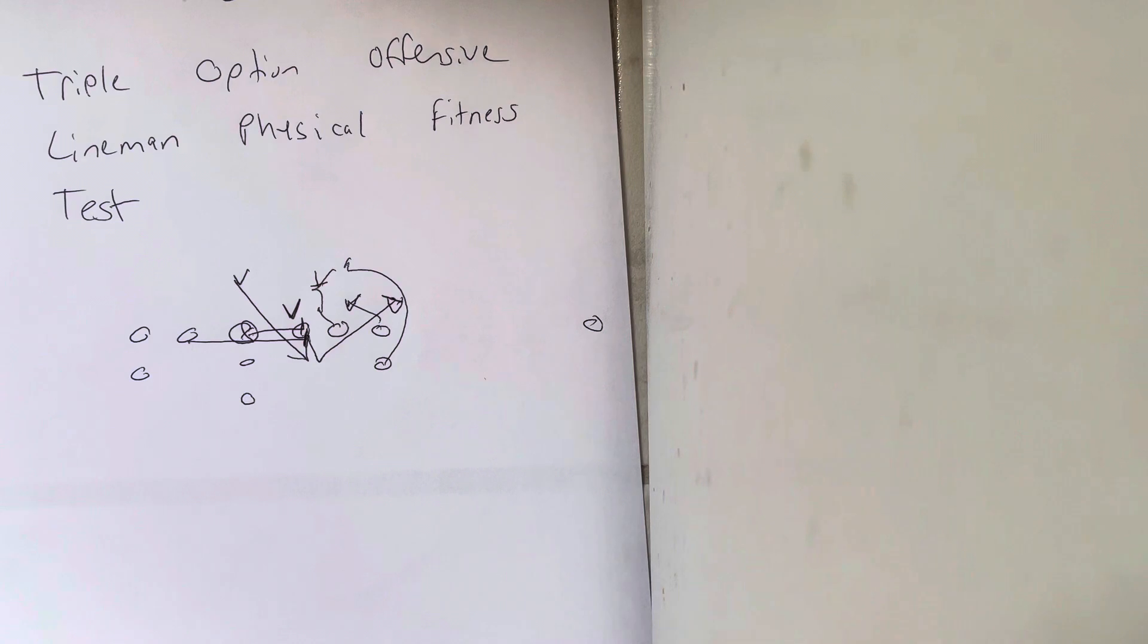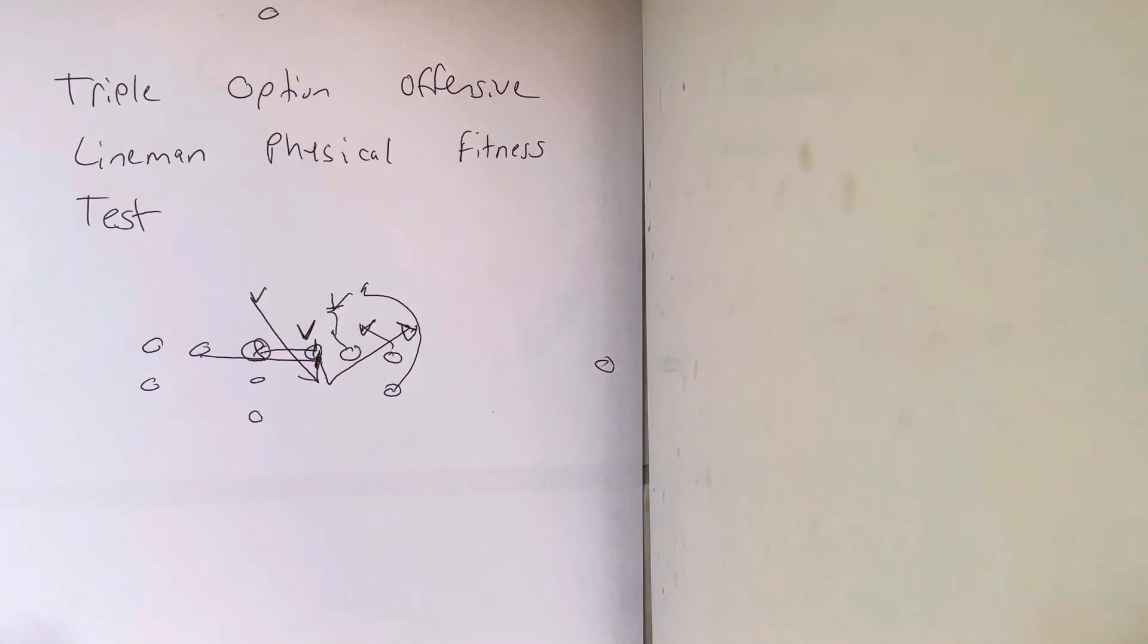The whole reason you're running this offense is because you're playing a bunch of ankle-biter mighty mites that can move. You just can't physically go one-on-one with people. But you better be able to move or you don't have a triple option offense.